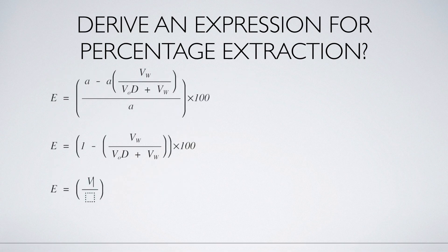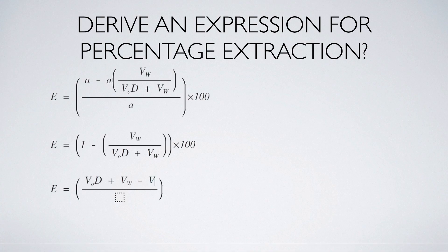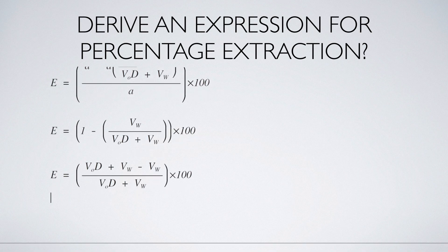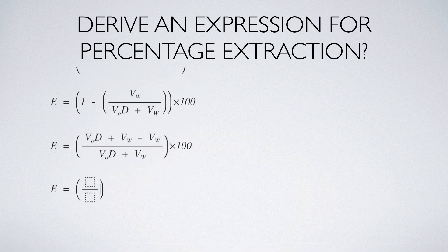Now, let's open the bracket. So, VOD plus VW minus VW divided by VOD plus VW into 100. Now, we can cancel VW.